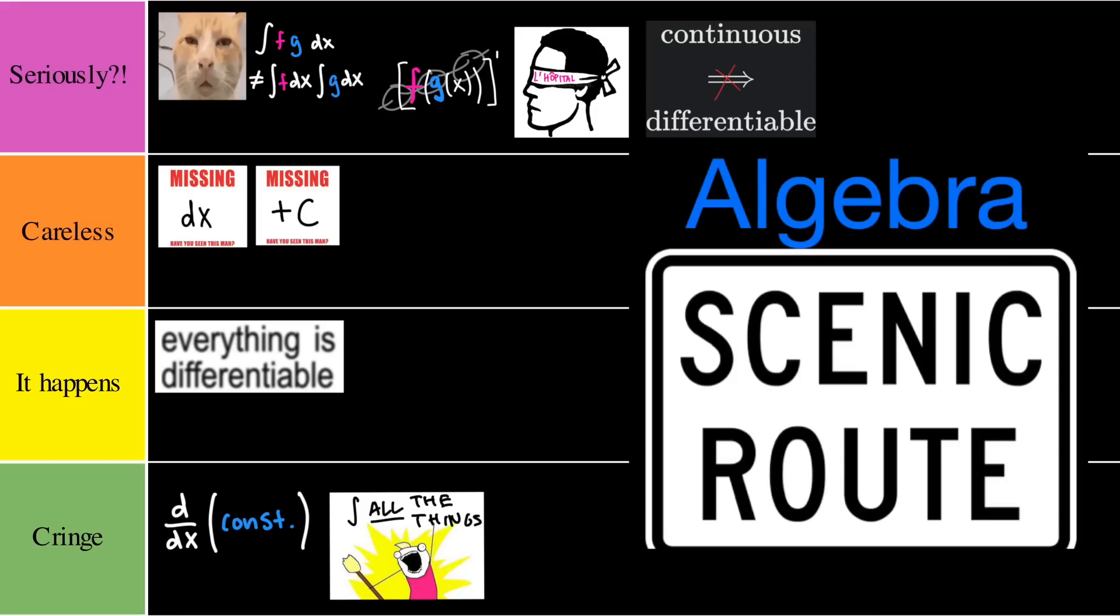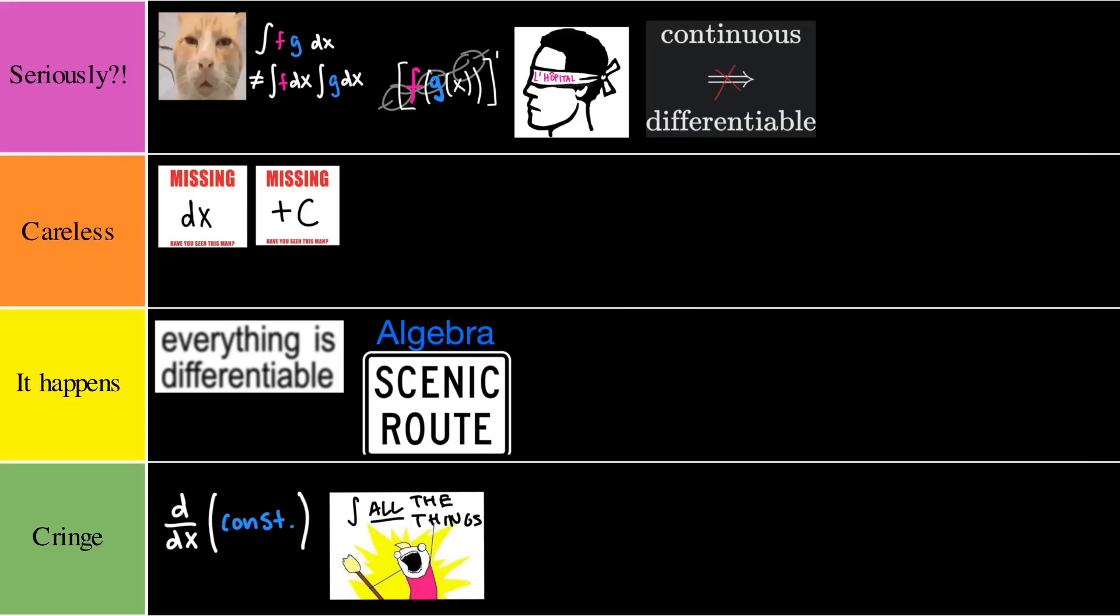Next we have taking the algebraic scenic route. We're doing algebra in a long time consuming way. Like expanding polynomials when you don't have to. It happens. Sometimes you get caught up in simplifying your expressions before realizing you've taken a much longer and more complicated path than necessary. But hey, it happens to the best of us.